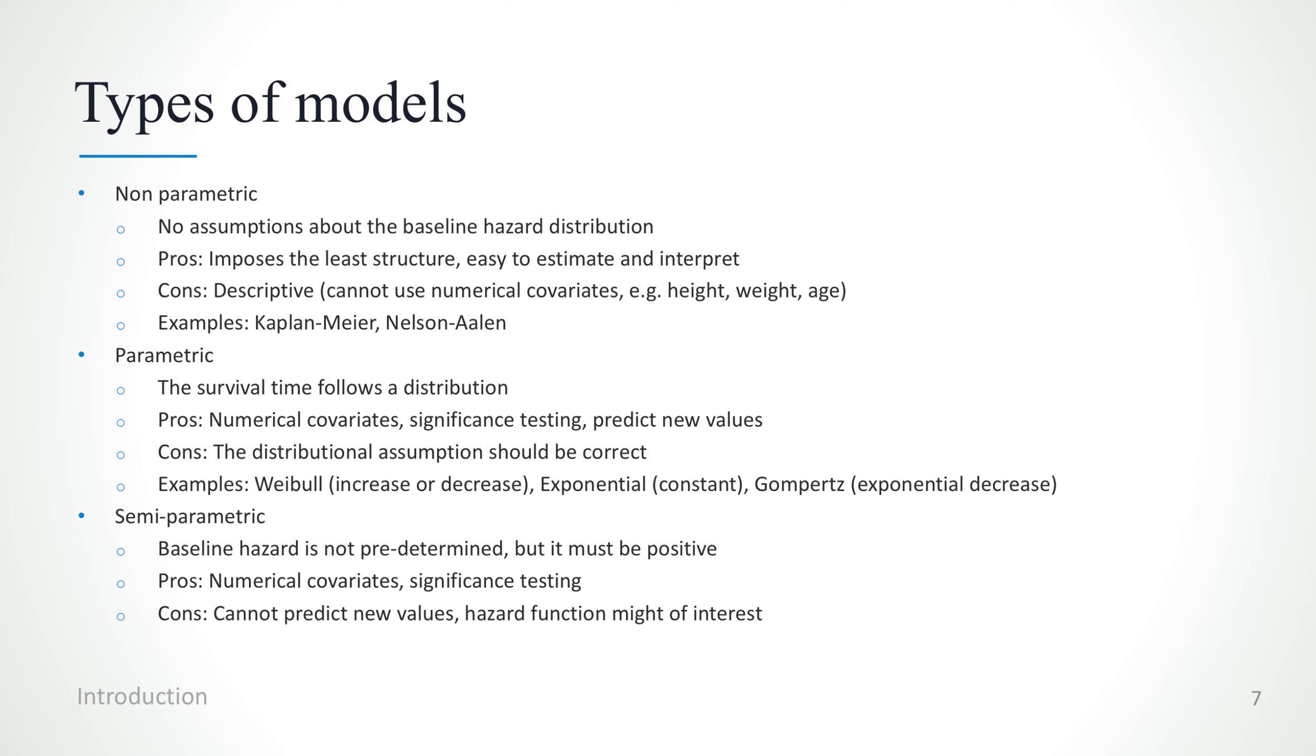In parametric models, the survival time explicitly follows a distribution. The pros are that with these kind of models we can use numerical covariates without discretization.